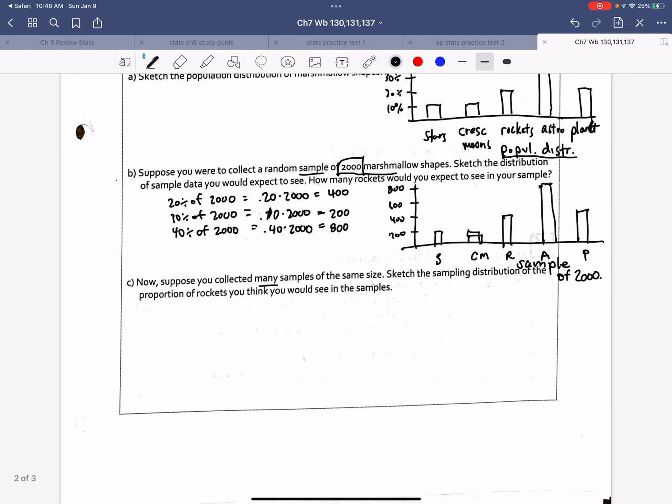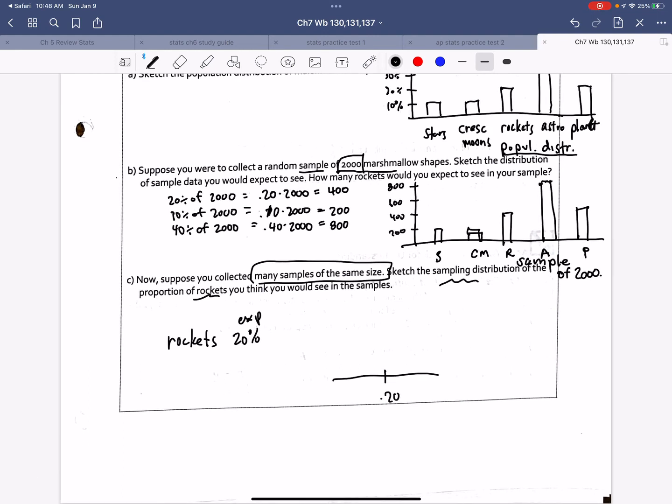Now, suppose we collect many samples of the same size. Sketch a sampling distribution of rockets we expect to see. So we know that rockets, we're expecting 20%. So if I took many, many samples of rockets, let's say I asked each student in class to take a sample and just count the rockets, many, many students are going to get exactly 20%. Some students might get 18%. Some students might get 22%. And again, this is similar to if I asked to flip a coin 100 times. Many students are going to get 50 heads. Many students are going to get 48 heads. Some students are going to get 55 heads. You get the point. We're assuming that this would be relatively symmetrical.